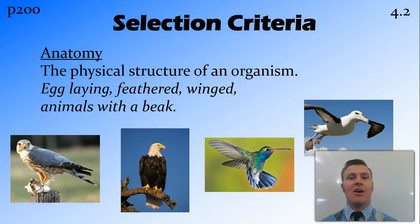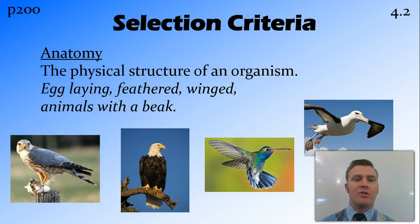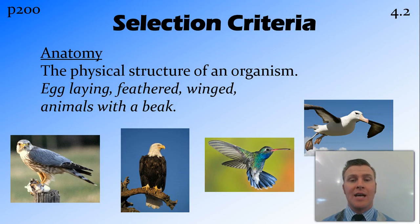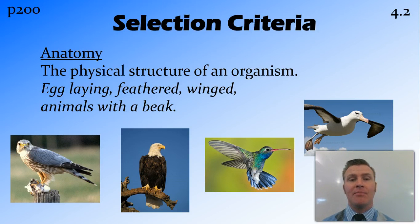Once you decide to classify things, you need to work out the selection criteria by which you're going to classify them. One of the easiest ways to classify things is through anatomy — the physical structure of an organism, or the things that you can actually see on the organism. For example, if we were to create a group or taxa for birds, some of the anatomy of that group is that they're egg-laying, they have feathers, they have wings, they have a beak, and they are animals.